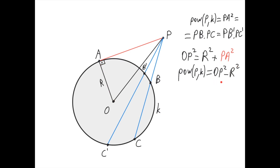This definition does not depend on the location of P. When P is outside of the circle, the distance from P to O is greater than R, so this quantity is positive. When P is on the circle, the distance between P and O is R, so we get R squared minus R squared, which is zero — the power of all points on the circle is zero. When P is inside the circle, the distance between P and O is less than R, so the power is negative.